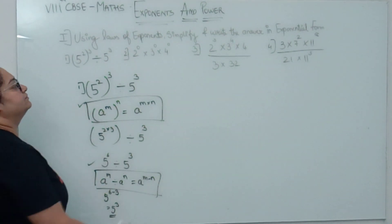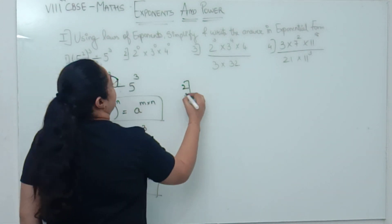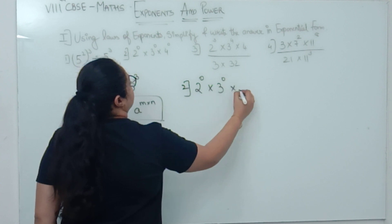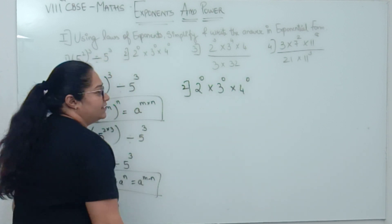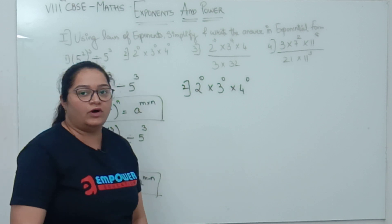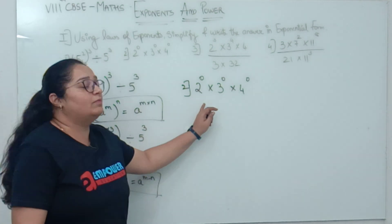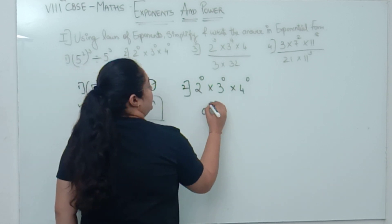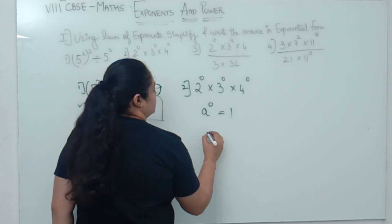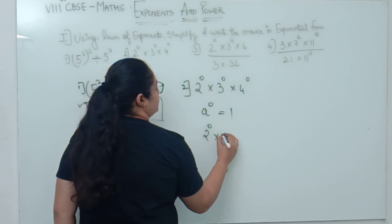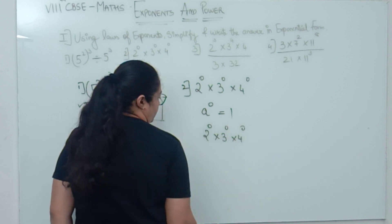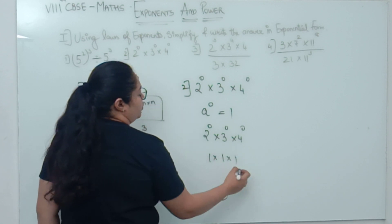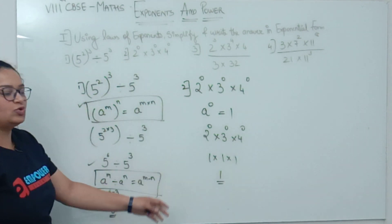Let us switch to the second sum. What does the second sum say? 2⁰ × 3⁰ × 4⁰. The sixth law is very important. You always make mistakes in this law. Anything raised to 0 will be 1. So, a raised to 0 equals 1. So, 2⁰ × 3⁰ × 4⁰ will give you 1 × 1 × 1, which equals 1. See? So easy.